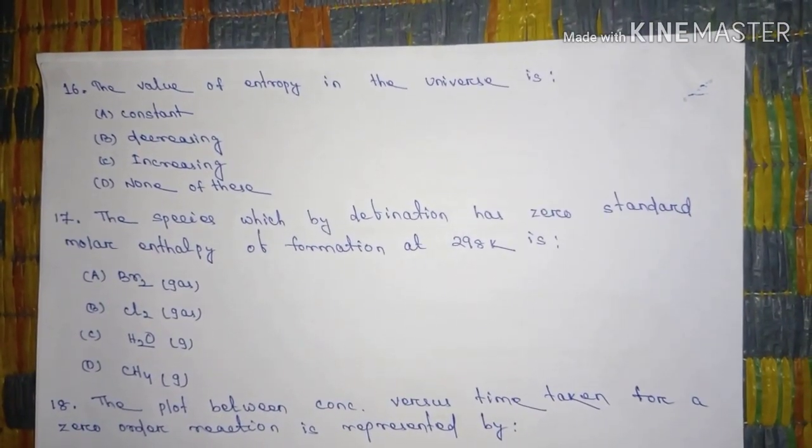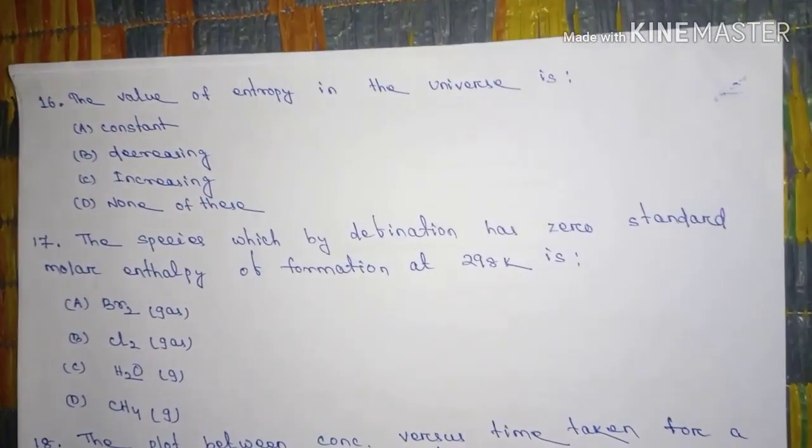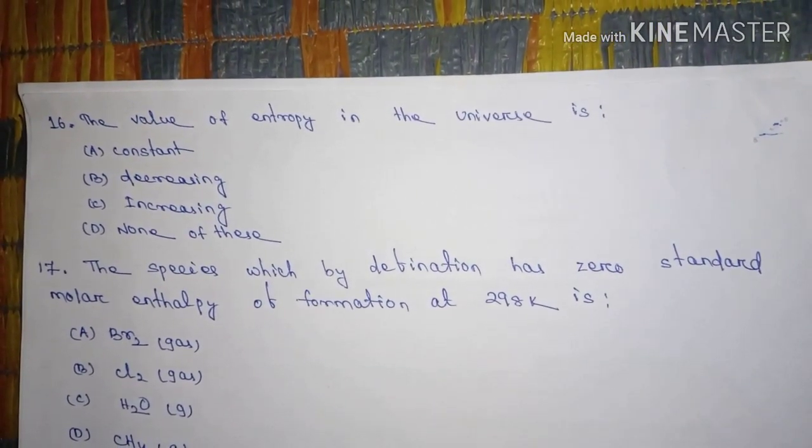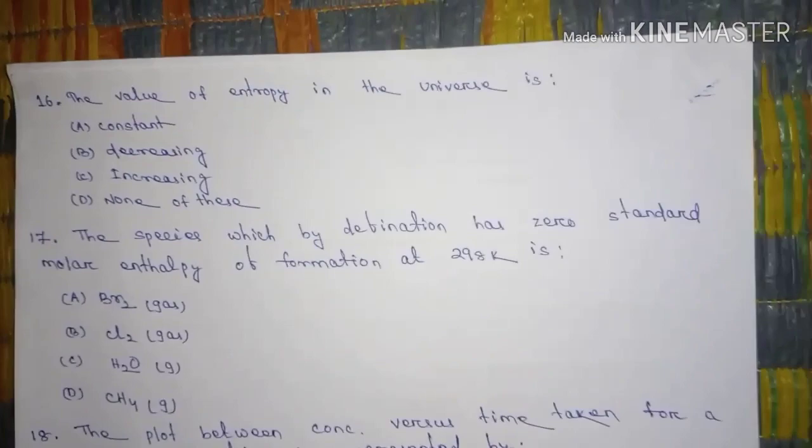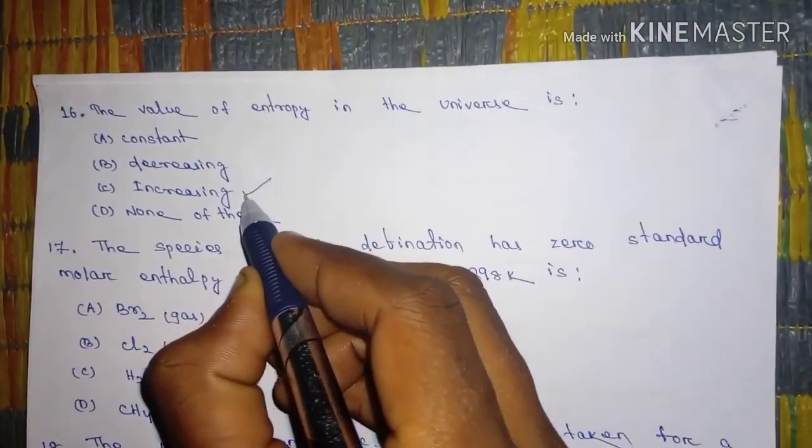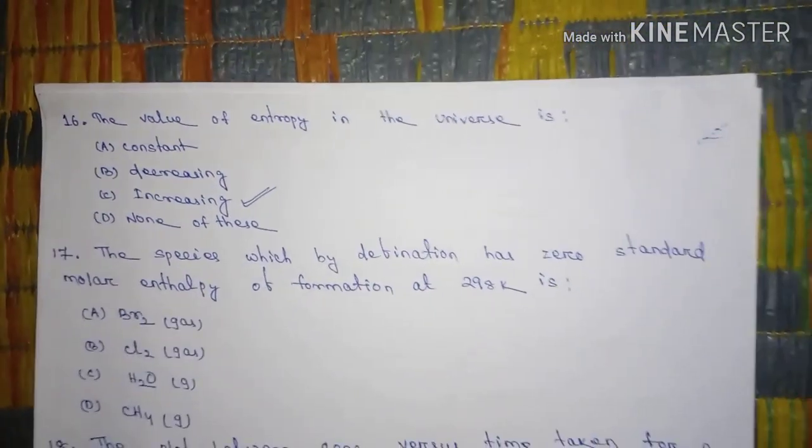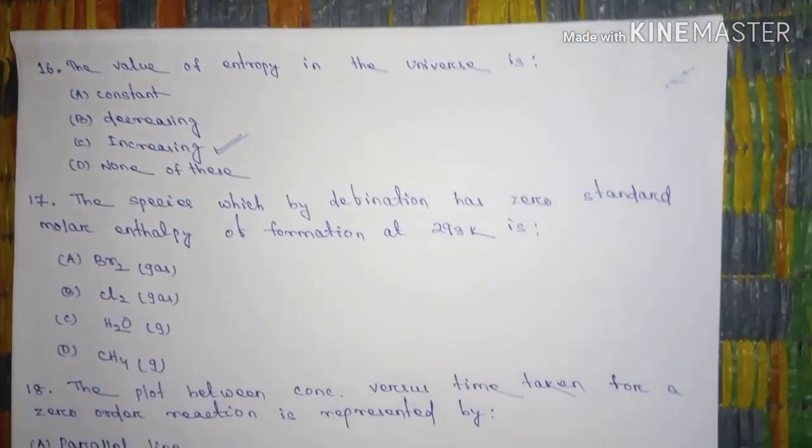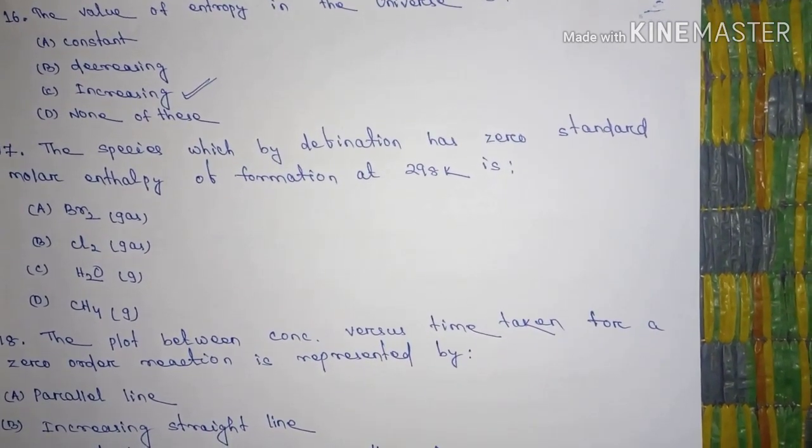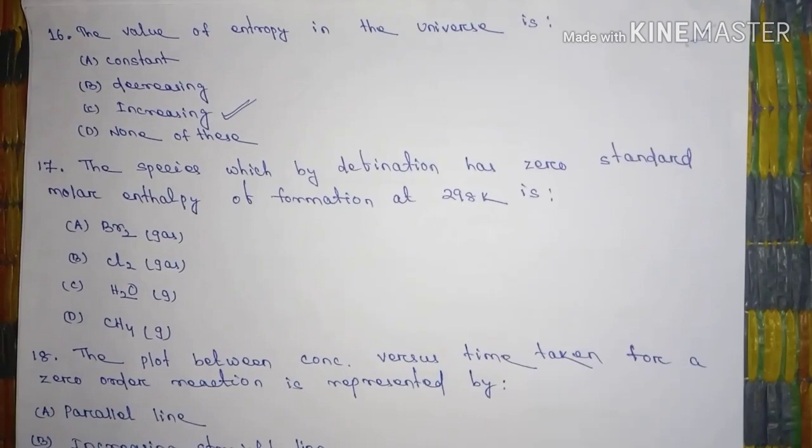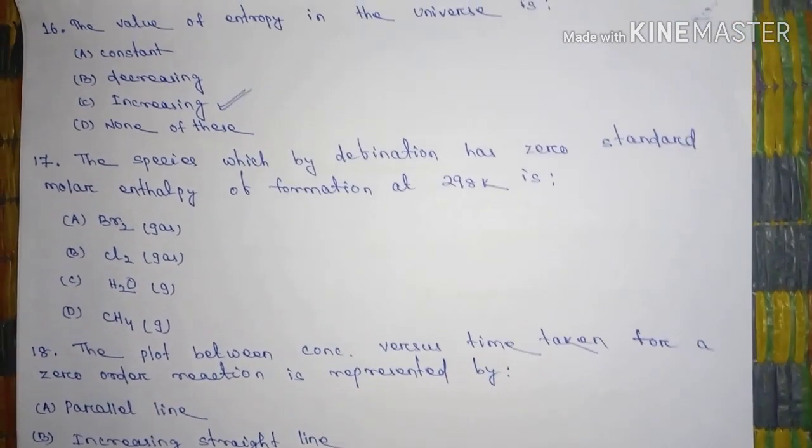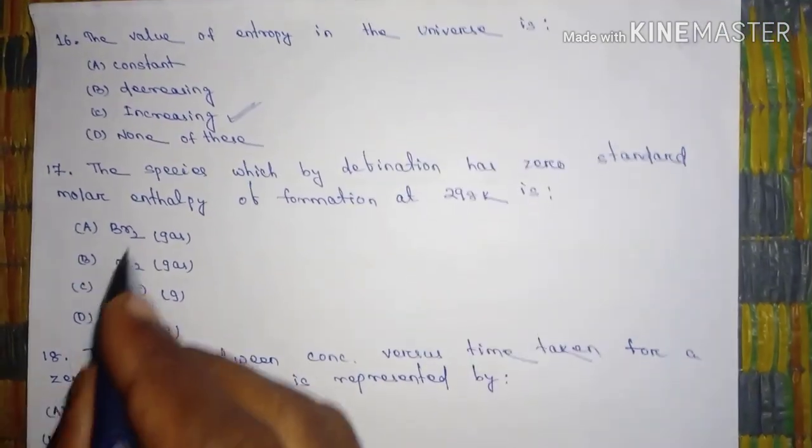Question number 16, the value of entropy in the universe is, the answer is increasing. The species which by definition has zero standard molar enthalpy of formation at 298 Kelvin, and the answer is Cl2 gas, and B.